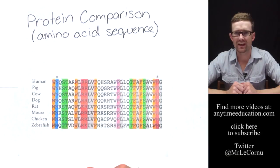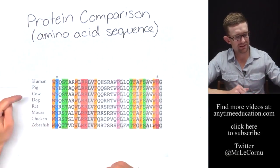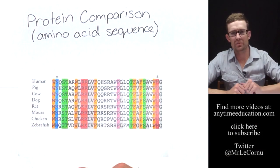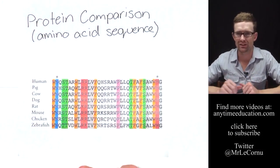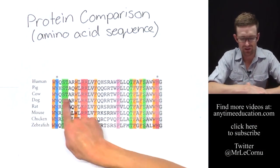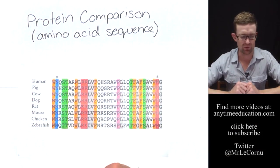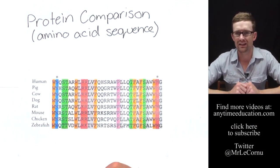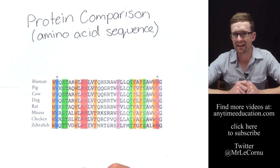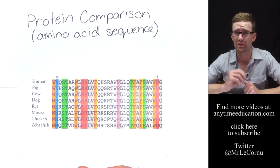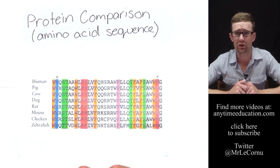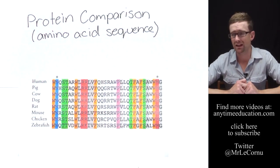So the answer that you should have got is that dog and cow are the most closely related based on this information because there are no differences in the amino acid sequence between dog and cow, which means their DNA sequence would be identical or very similar. It may not be identical because remember there's more than one codon for each amino acid. So there may be slight differences but not many.